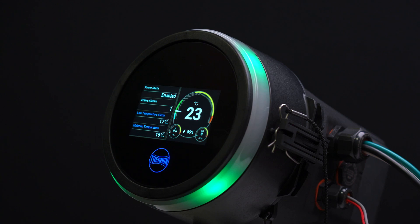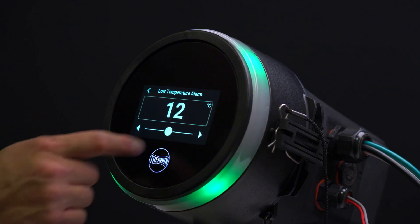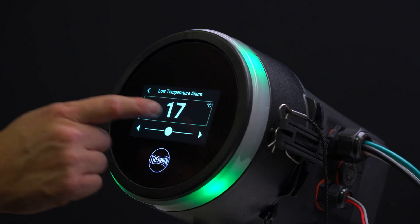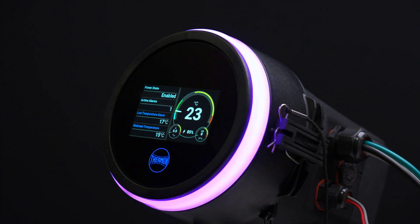The Genesis Duo is now experiencing a programming error indicated by flashing purple light ring. An example might be if the low temperature alarm limit is set above the maintained temperature.